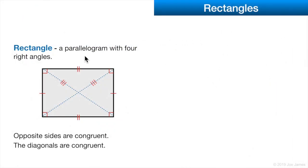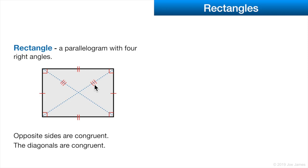A rectangle is a special parallelogram with four right angles. It has all the properties of a parallelogram: four sides, closed figure, and opposite sides are congruent. One additional property of a rectangle is that the diagonals are congruent — the two diagonals are exactly the same length, which is not true of all parallelograms.